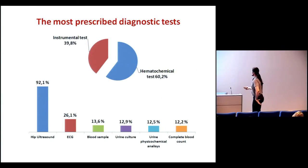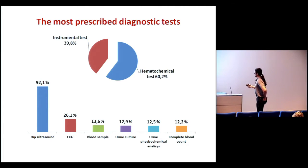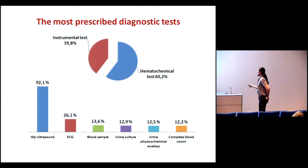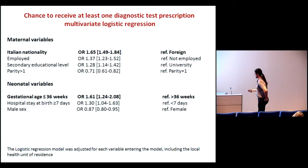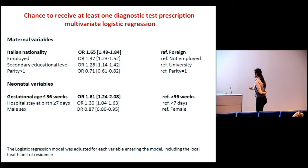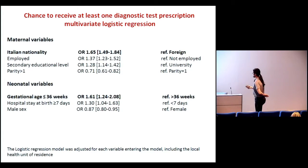If we look at diagnostic testing, they were mainly hematochemical tests. About 92% of children received a hip ultrasound, which is routinely performed for dysplasia screening, so that is quite expected. In this case, the variables associated with the chance to receive at least one diagnostic test were Italian nationality — a maternal variable — and low gestational age.